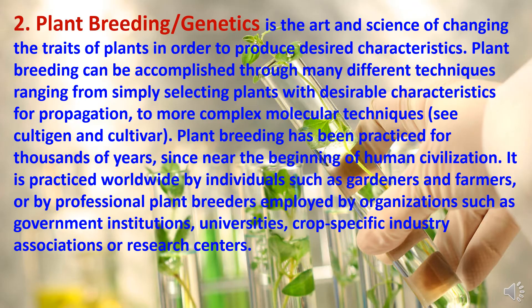The second branch is plant breeding and genetics. It is the art and science of changing the traits of plants in order to produce desired characteristics. Plant breeding can be accomplished through many different techniques ranging from simply selecting plants with desirable characteristics for propagation to more complex molecular techniques. It is practiced worldwide by individuals such as gardeners and farmers or by professional plant breeders employed by organizations such as government institutions, universities, crop-specific industries, associations or research centers.